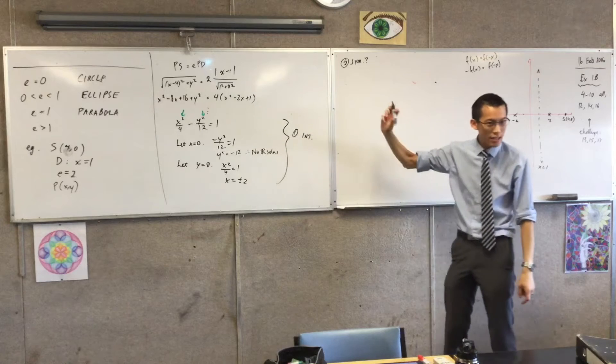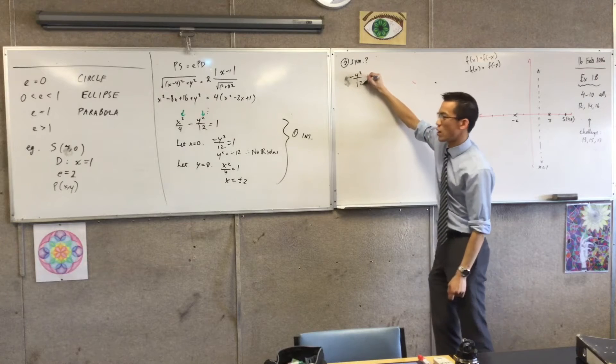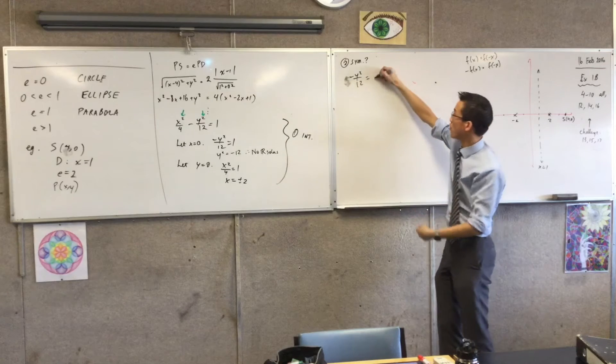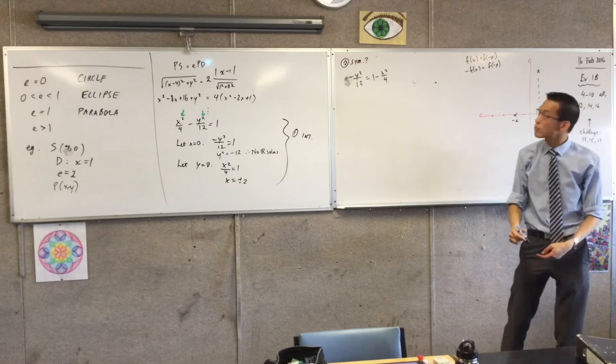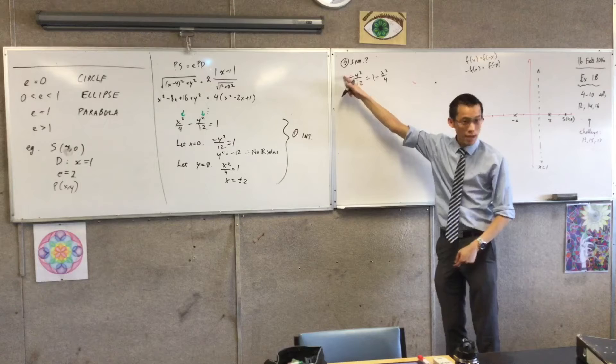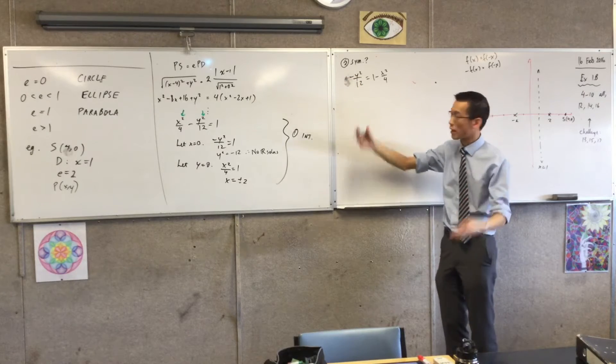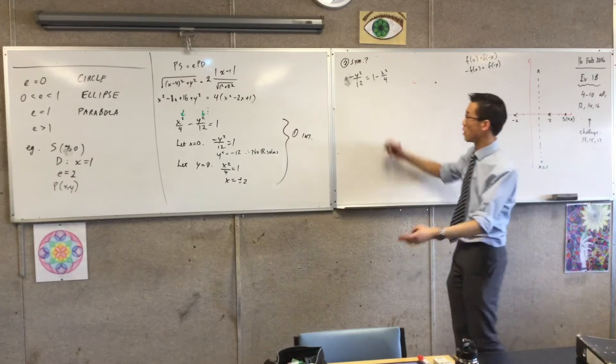Let's go make y the subject. I'm going to get minus y squared over 12, and I'll kick over that x squared over 4 over this way. How does that look? Now, to make y the subject, I need to get rid of these two constants here, the minus 1 and the 12, or the minus 12. So I'm going to multiply both sides by negative 12. Is that okay?